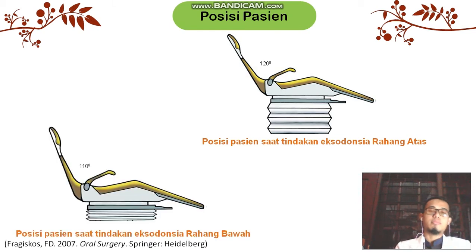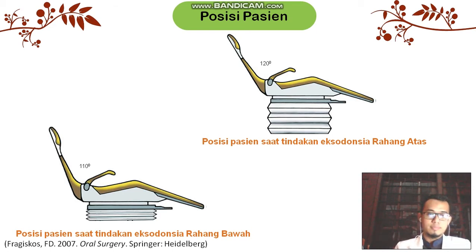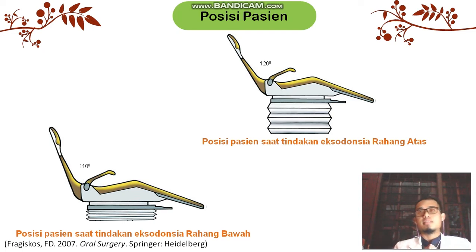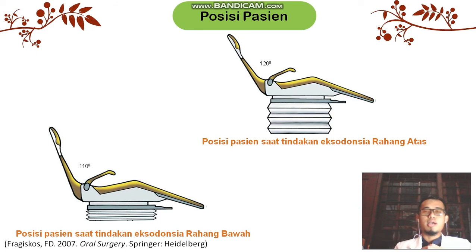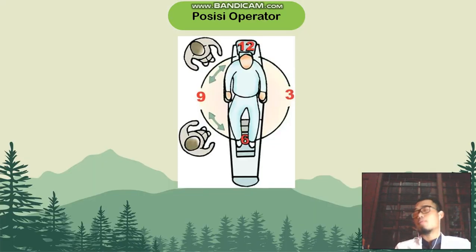Pada rahang bawah, ketinggian kursi diatur sehingga rahang bawah pasien berada sedikit di bawah siku dokter gigi. Sudut kemiringan sandaran kursi gigi dengan bidang lantai adalah 110 derajat — sedikit lebih tegak. Sehingga ketika mengerjakan regio di mandibula atau rahang bawah, saat pasien membuka mulut, rahang bawah pasien berada pada sudut 45 derajat terhadap bidang lantai.